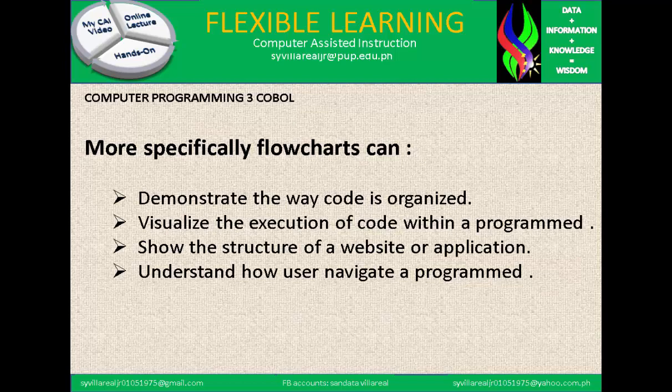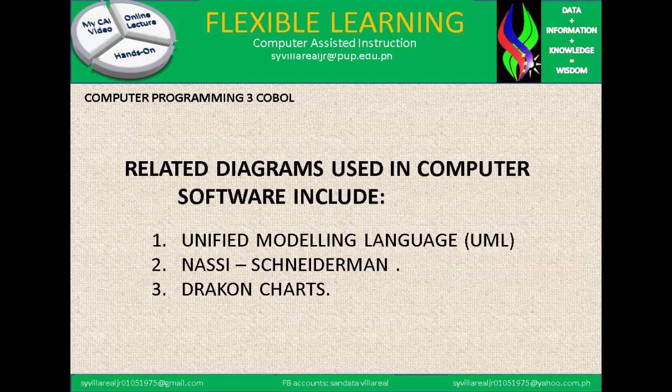A flowchart also helps understand how users navigate a program. There are also related diagrams used in computer software. These include: number one, UML or Unified Modeling Language; number two, the Nassi-Shneiderman diagram; and number three, the Drakon Charts. All of these are used in developing a program.